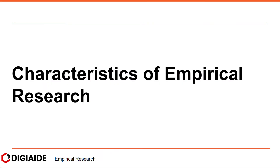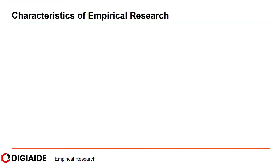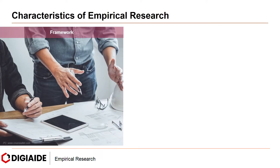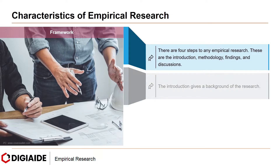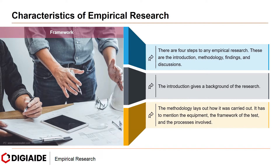Moving on to the characteristics of empirical research. First, framework — there are four steps to any empirical research: the introduction, methodology, findings, and discussions. The introduction gives a background of the research. The methodology lays out how it was carried out, mentioning the equipment, the framework of the test, and the process involved. The findings are the results, and the discussion must mention why the research is needed and crucial.